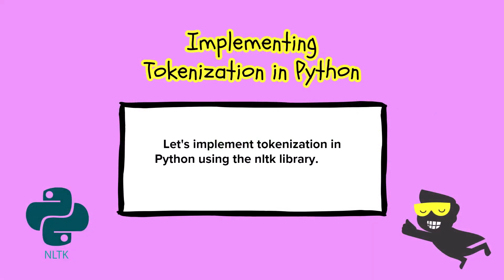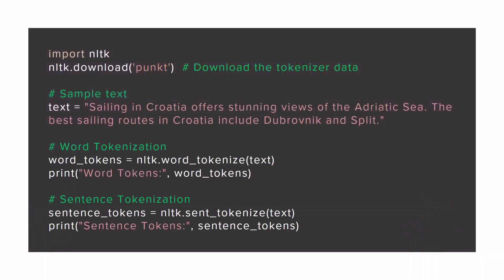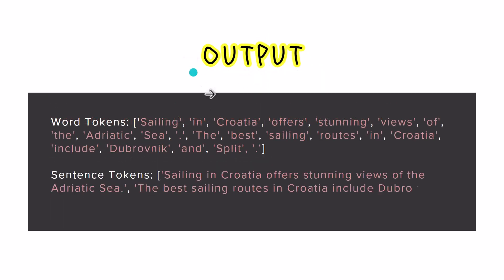When we get hands-on with implementation in Python, we'll use NLTK — the Natural Language Toolkit — which provides easy-to-use functions for tokenization. For example, given sample text like 'Sailing in Croatia offers stunning views of the Adriatic Sea. The best sailing routes in Croatia include Dubrovnik and Split,' we can perform word tokenization or sentence tokenization. Word tokens would produce all individual words, while sentence tokens would split the text into two sentences — one for each.